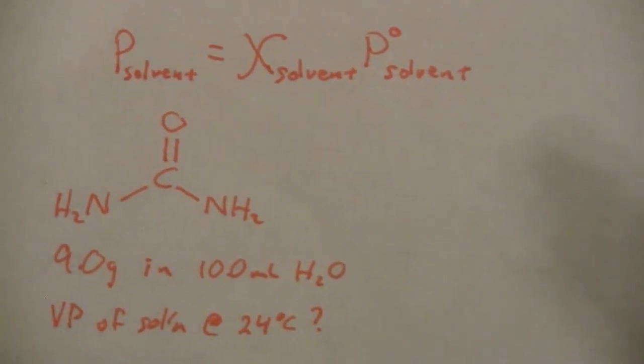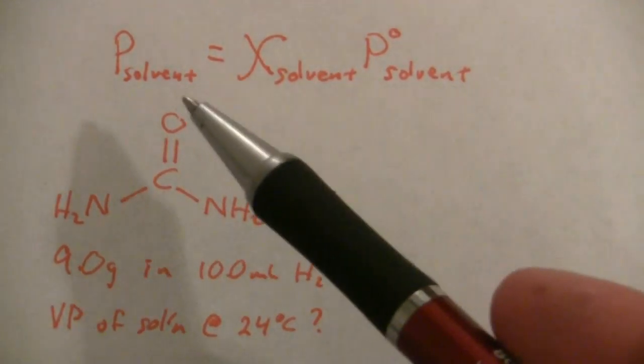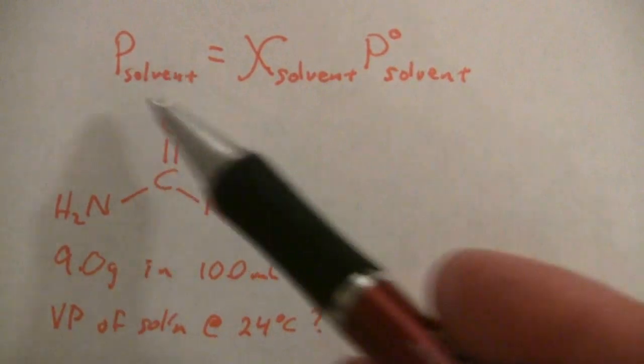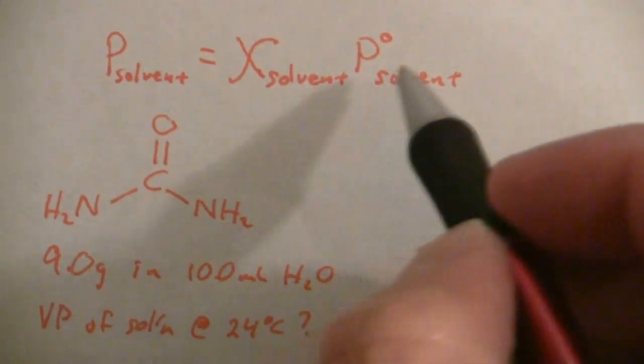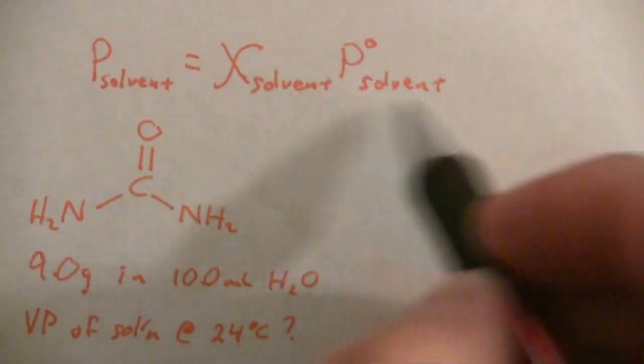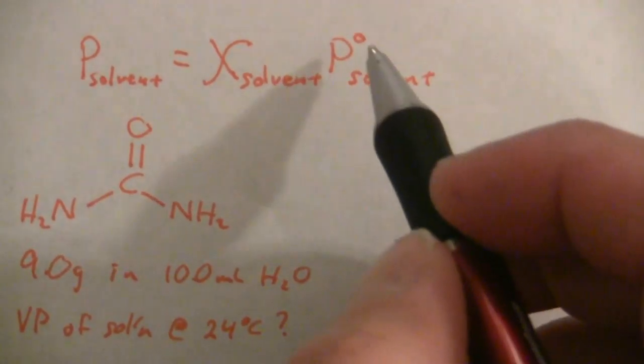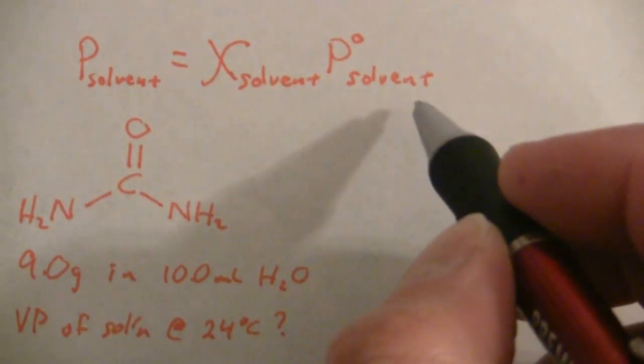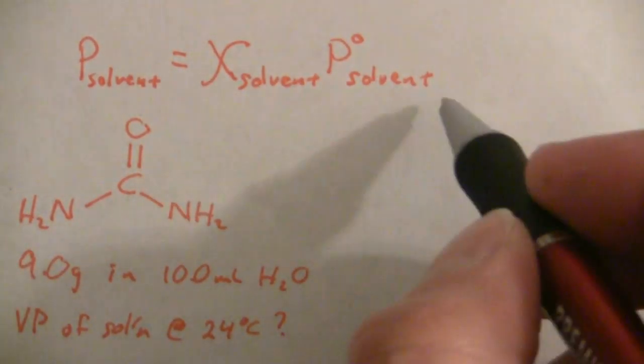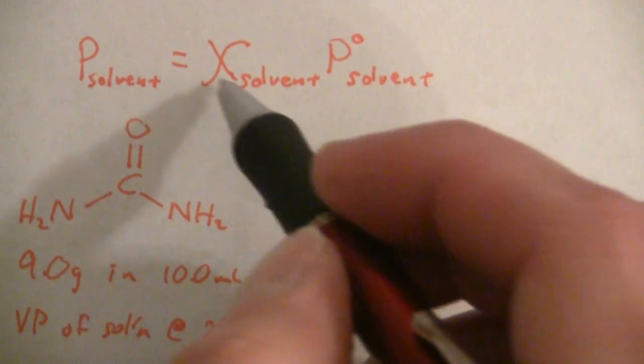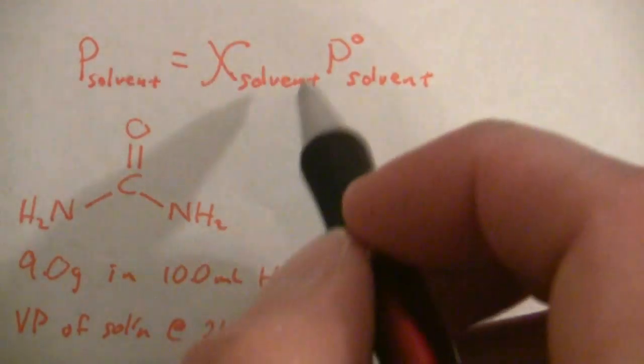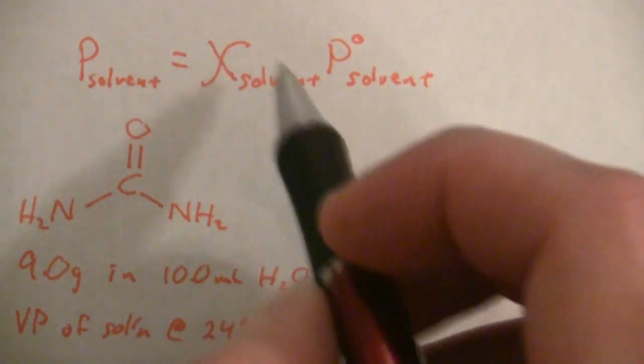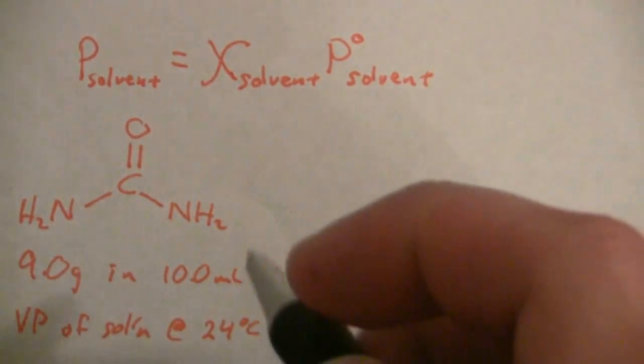We're going to be using Raoult's Law, which says that the pressure of the solvent over a solution is equal to the mole fraction of the solvent times the pressure of the pure solvent. That's what the naught means—that is the vapor pressure of the pure solvent.